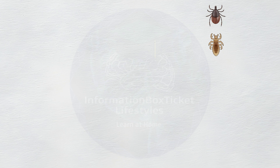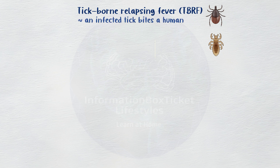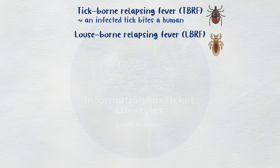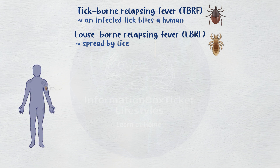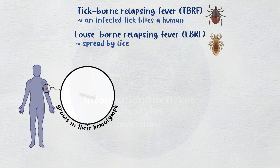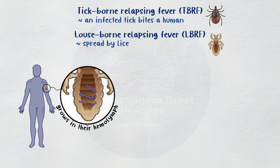Depending on the type of relapsing fever, there are two possible entry points for Borrelia into the body. The bacterium that causes tick-borne relapsing fever, or TBRF, enters the circulation when an infected tick bites a human. The bacterium that causes louse-borne relapsing fever, or LBRF, is spread by lice. Lice that feed on sick persons pick up Borrelia, which grows in their hemolymph, or blood-like substance, and in their stomach.